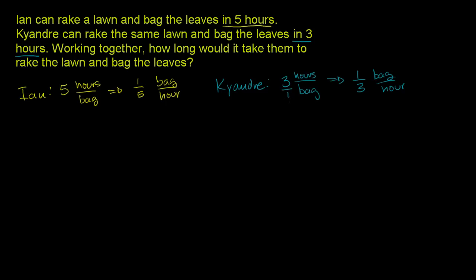You could view it as three hours per one bag, you invert it, you get one bag per three hours. This is five hours per one bag, same thing as one bag per five hours, you're just inverting the ratio, not really changing the information.